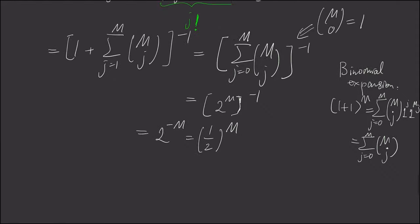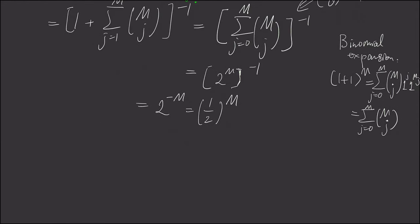Which means inside this bracket, it's two to the mth power to the minus one. And as a result, this is two to the negative mth power. And this is nothing but one half raised to the mth power. And now, which means we can further solve for pi i.